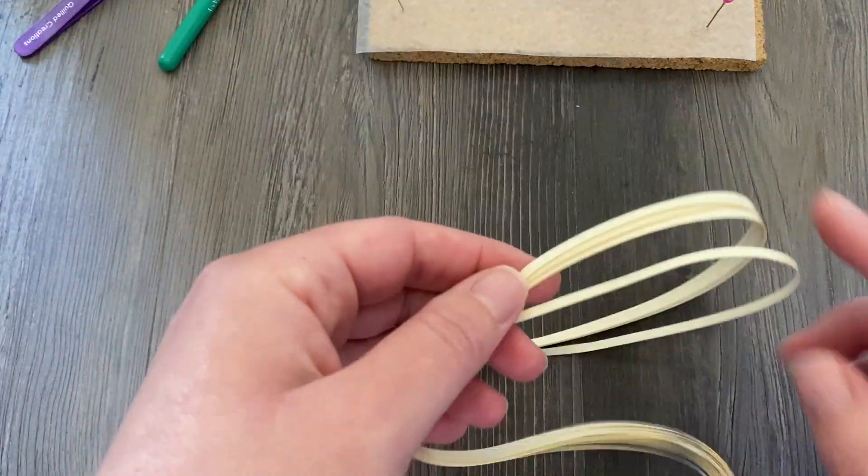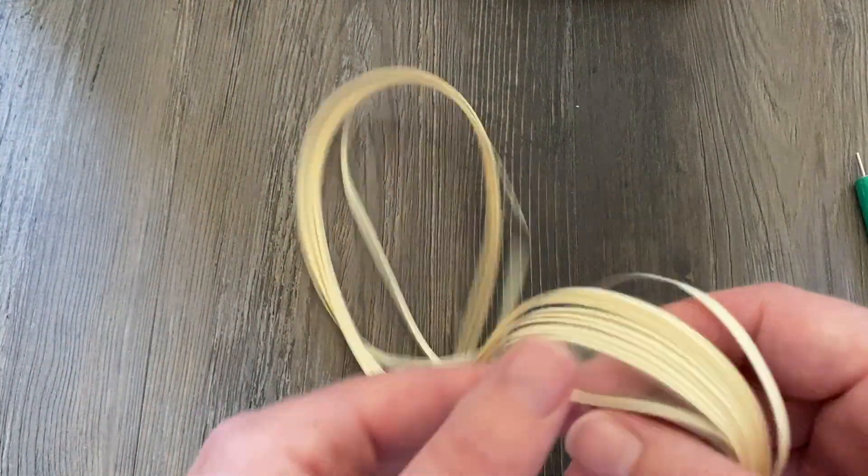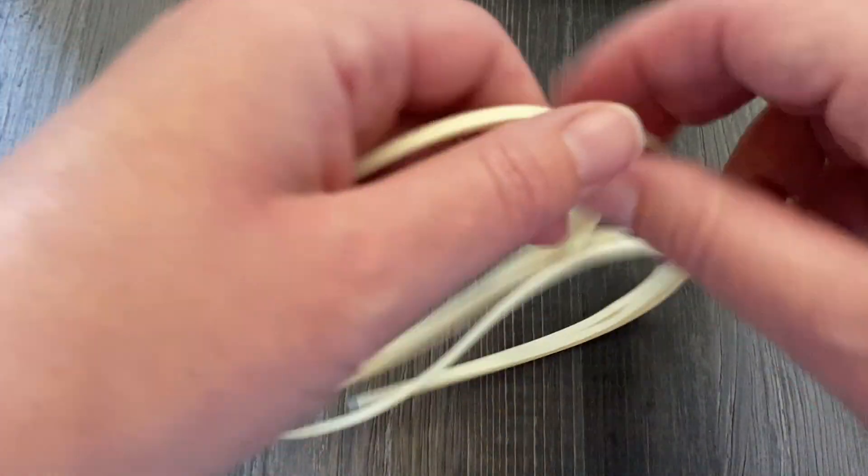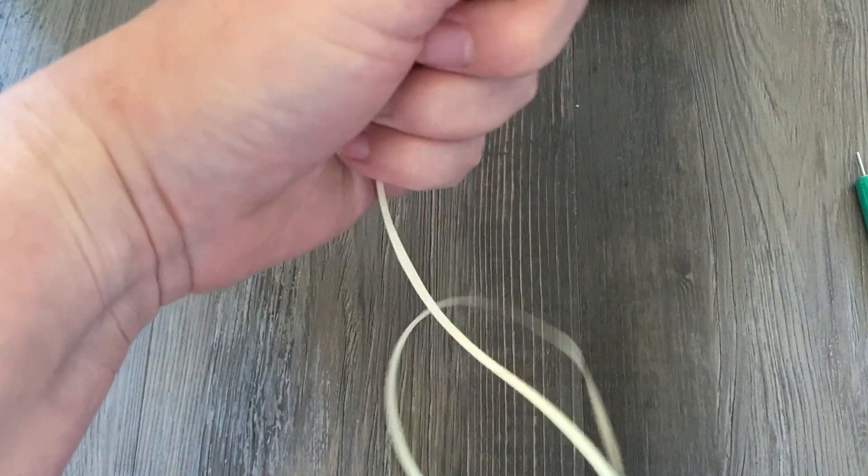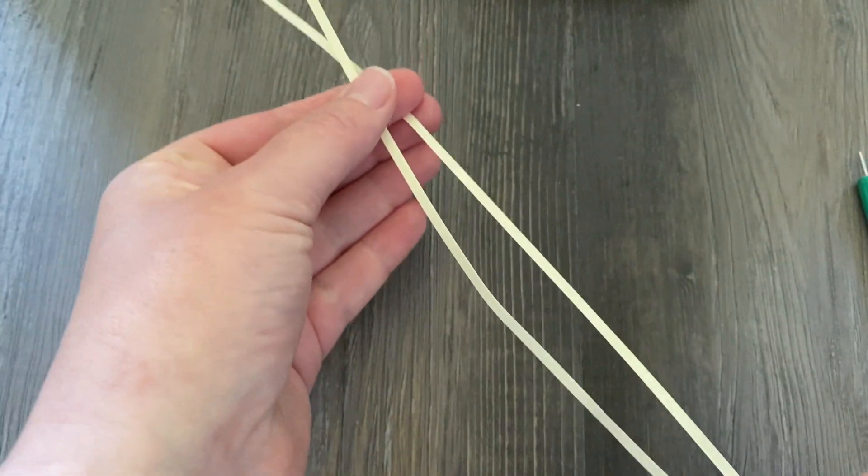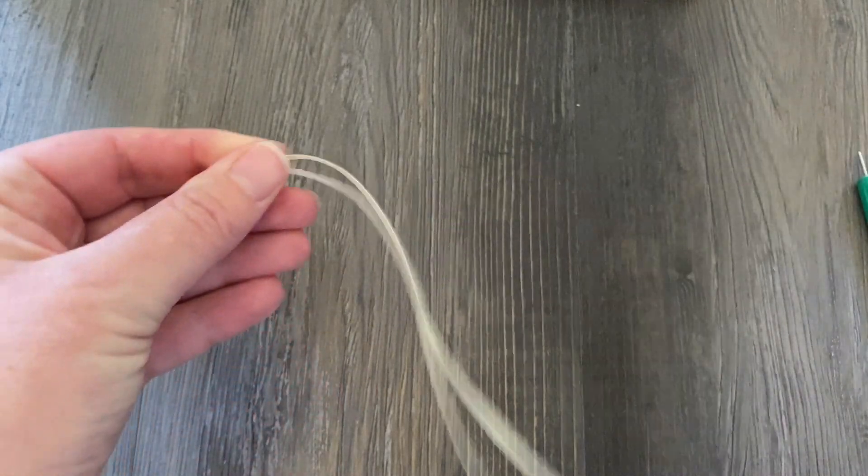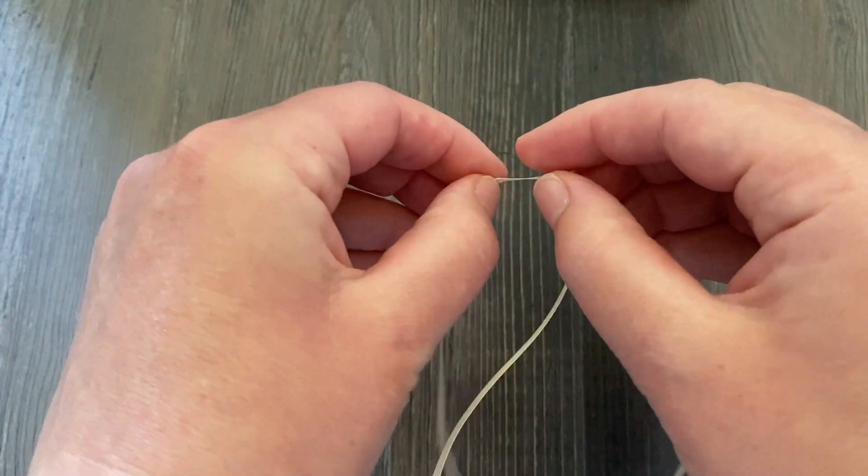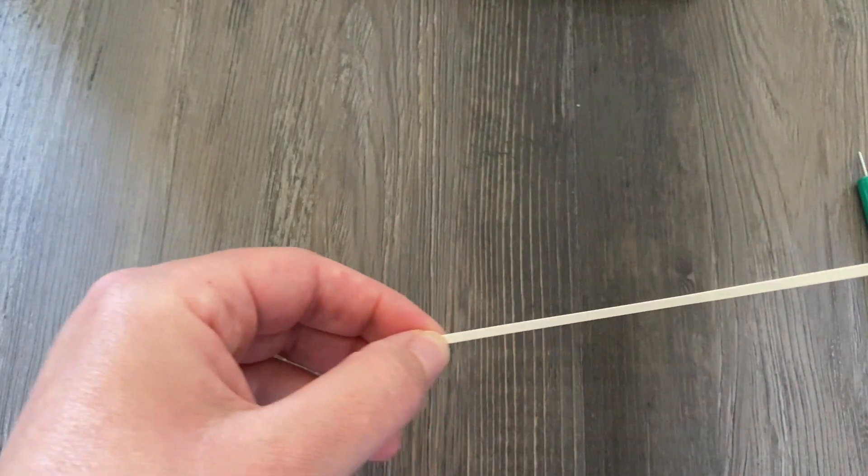We're going to get started with the largest of these flowers. I have ivory strips here from Craft Harbor about 24 inches long. I'm going to be tearing these right in half, and each of these halves is going to make one flower petal. So each petal is about 12 inches in length.